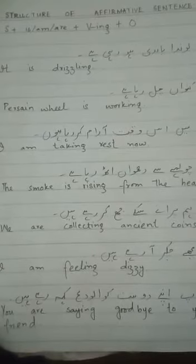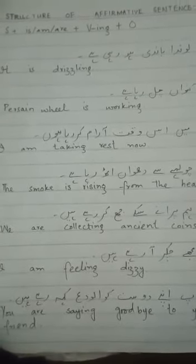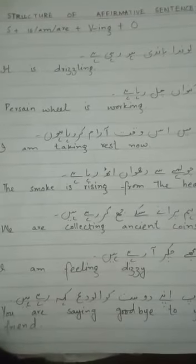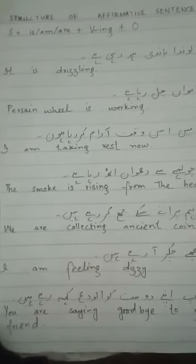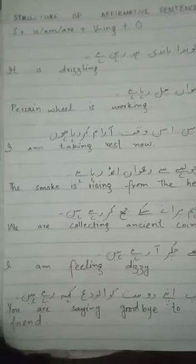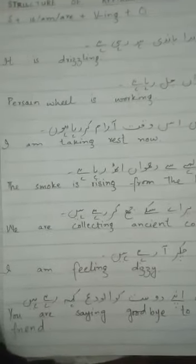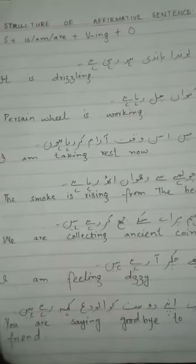Exercise one کا پہلا sentence: بھوند باندی ہو رہی ہے۔ Drizzle کا word بھوند باندی کے لیے use ہوتا ہے، اور بارش یا بھوند باندی کے لیے pronoun it use ہوتا ہے — It is drizzling. دوسرا sentence: کنواں چل رہا ہے — Persian wheel is working.